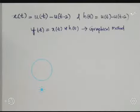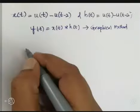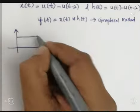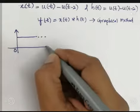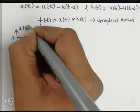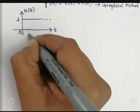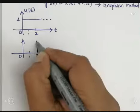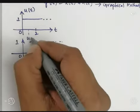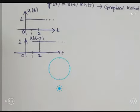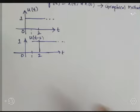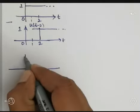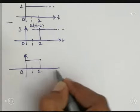First we have to sketch x(t), which is u(t) minus u(t-2). We know that u(t) has amplitude 1 if t is greater than or equal to 0. Then we sketch u(t-2), so the signal starts from 2 onwards. Subtracting u(t-2) from u(t), we get a signal from 0 to 2 — this is our x(t).